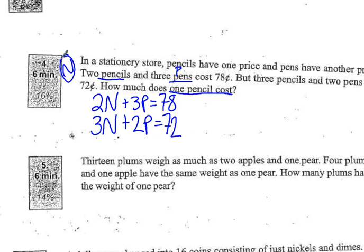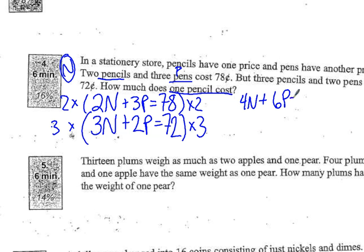So, the first thing I could do is I want to make it so that I can have equivalent amounts of either P or N, so I can get rid of it. So, one way I could do that is I know three times two is six. So, I can take this and I can multiply it by two. And I can take this equation and multiply it by three on both sides. So, that I get an even number of P's in both equations. So, my new equation over here would be 4N plus 6P equals... Oh, man. Yeah, 156. And my new equation here is 9N plus 6P equals 216.